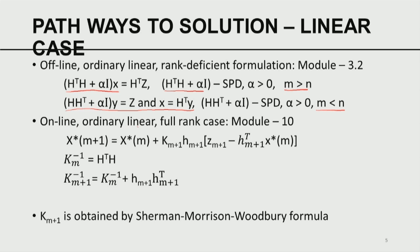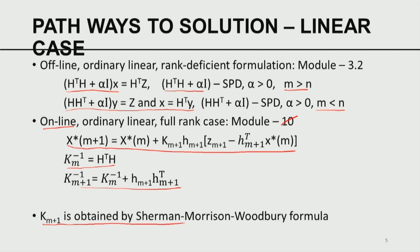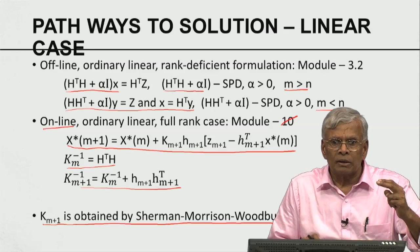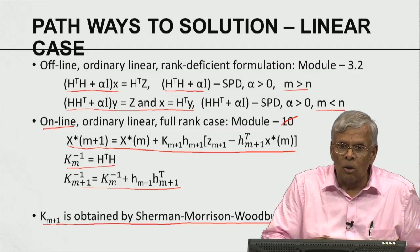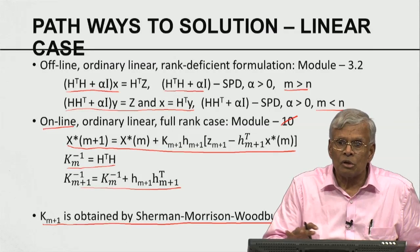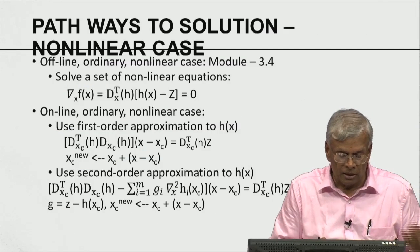For the online ordinary linear full rank case, the equations are given iteratively, and K_m is iteratively calculated. Here again we are interested in computing inverses of certain matrices. K_{m+1} is obtained by the Sherman-Morrison-Woodbury formula. So we have covered offline problems as well as online problems, and solutions of these equations give rise to the least squares solution of the least square problem.